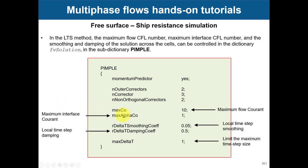These parameters represent smoothing and damping to avoid rapid changes in the local time step across cells. The values I'm providing here are reasonable defaults most of the time, but occasionally you'll need to adjust them. They are bounded between zero and one. You can also define a maximum delta t so no cell exceeds that value.